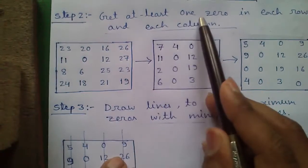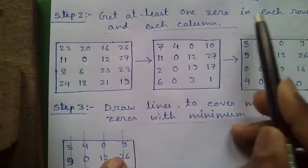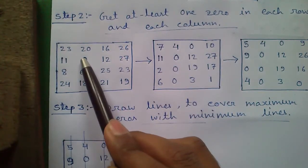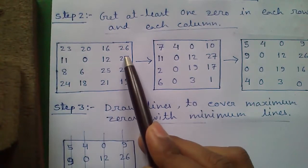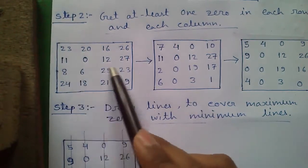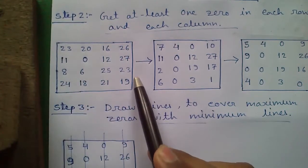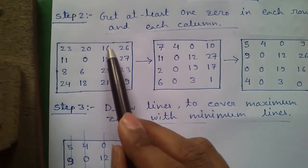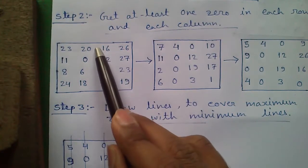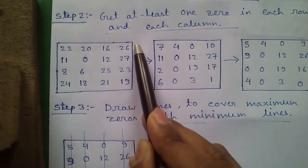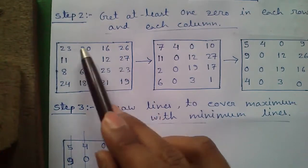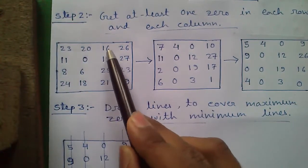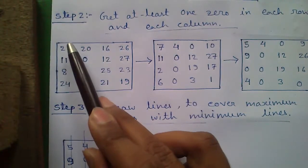Similarly do the process for all the elements. Step 2: get at least one zero in each row and each column. This is the minimization problem I have rewritten here. Scan each row to see whether there is at least one zero or not. In row 1, row 3, and row 4 we don't have zeros. To bring a zero, search for the smallest number in that row and subtract that number from each of the numbers in that row.